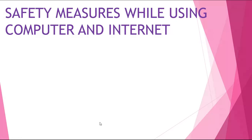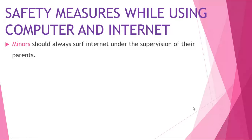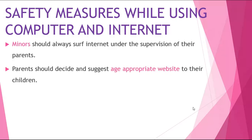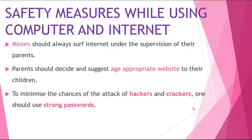Safety measures while using computer and internet. Let us look at the various safety measures which should be undertaken while using computer and internet. First, minors should always surf the internet under the supervision of their parents. Parents should decide and suggest age-appropriate websites to their children. To minimize the chances of attack by hackers and crackers, one should use strong passwords.